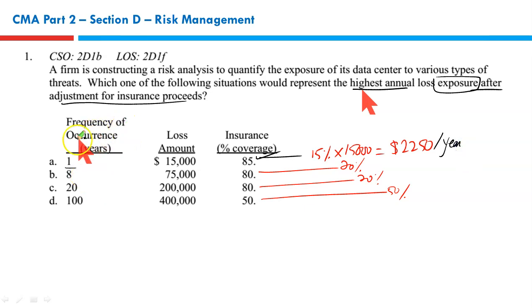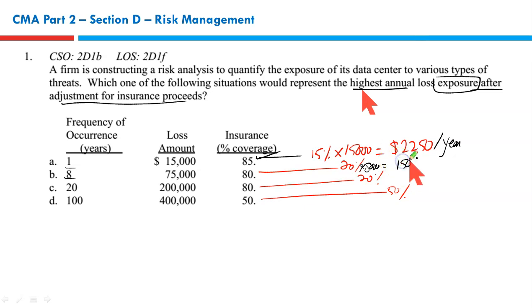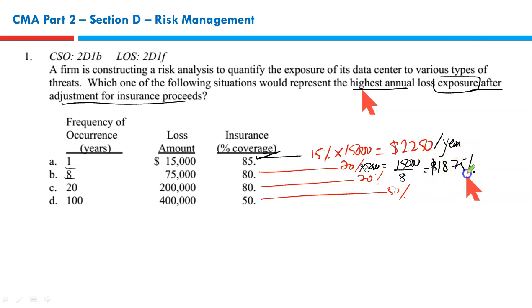What about the next one? Frequency of occurrence is once in 8 years. Loss could be $75,000. 80% is covered under insurance, so 20% is not covered. 20% of $75,000 is $15,000. This is for an 8-year period, so on a yearly basis, $15,000 divided by 8 is $1,875 per year.